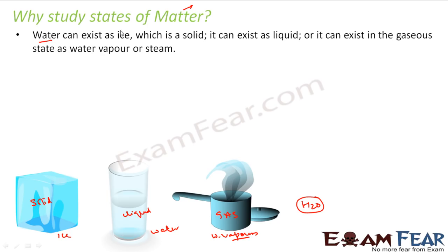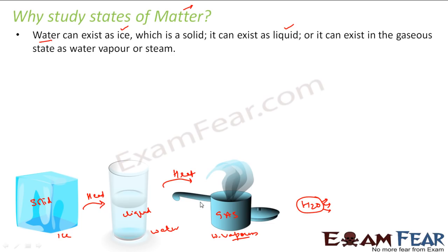The same H2O exists as ice, which is solid; liquid water; and also in the gaseous or steam form. So you must be thinking why the same chemical compound H2O exists in three different forms. What is the law that governs this? What decides whether the compound will be solid, liquid, or gas? If you heat ice it becomes liquid, and if you heat further it becomes gas. We will understand why on heating ice becomes water and water becomes vapors — there are laws which govern all this.